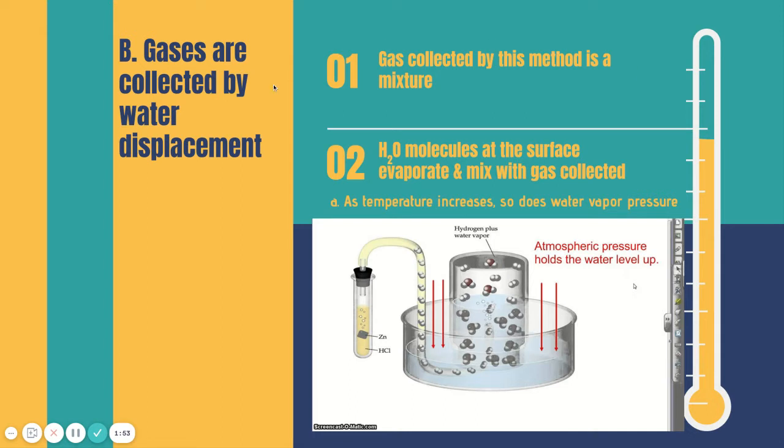When we collect gas in a lab we typically do it over water. This picture is what that would look like. You will actually be performing this in the lab where we take hydrochloric acid, we drop a solid piece of zinc in it and that's a single replacement reaction where we get zinc chloride and hydrogen on its own.